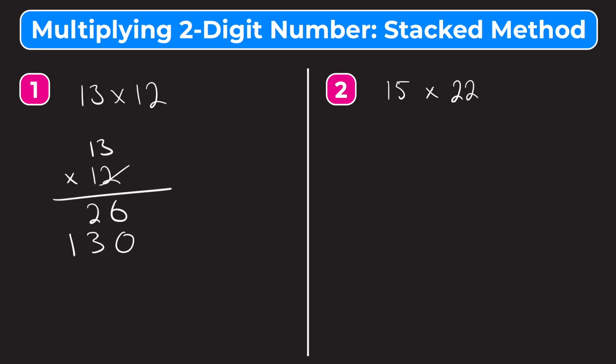And so now our last step is just to add these two together, because essentially what we have is we have two times 13, which equals 26, and then 10 from the tens place in the 12 times 13, which is 130. So we add those together, it should give us our final answer. So six plus zero, that's six, two plus three is five, and then one plus nothing is one. So our final answer is 156. 13 times 12 is 156.